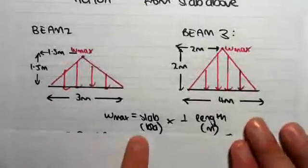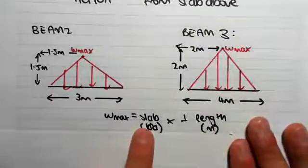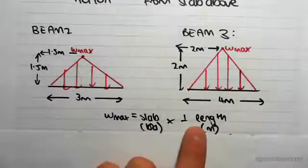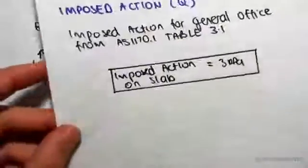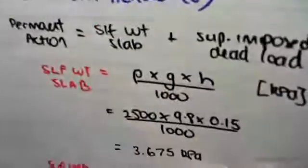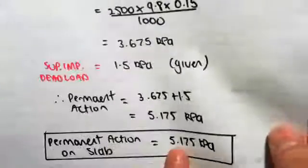W max is the slab area load times by the perpendicular length. So the slab area load we found in one of the first videos to be 3 kPa. The slab area load for the dead load was 5.175, but we're doing live load now, so we're looking at the 3 kPa value.